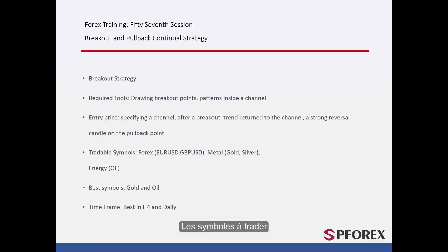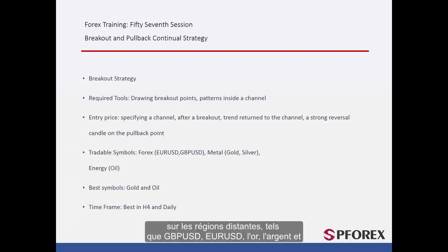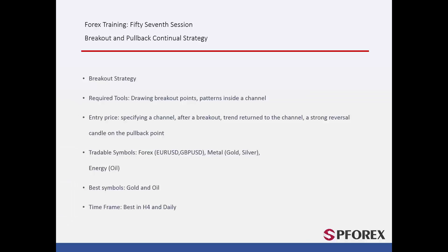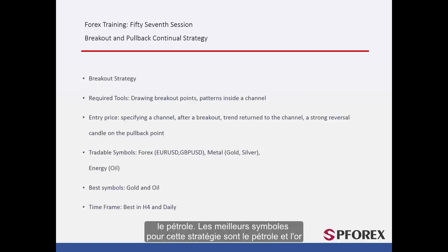Tradable Symbols: This strategy can be exploited on all symbols, on ranged regions such as Euro against US Dollars, British Pounds against US Dollars, Gold, Silver, and Oil. The best symbols for this strategy are Oil and Gold.